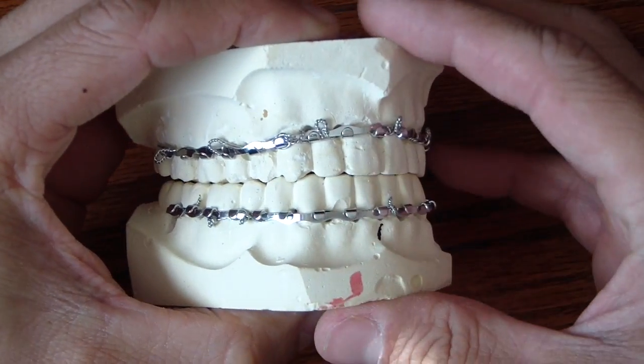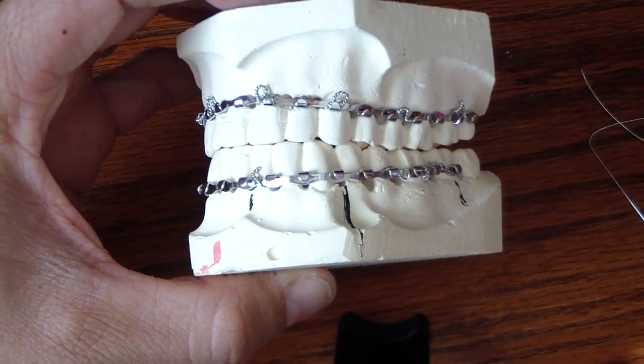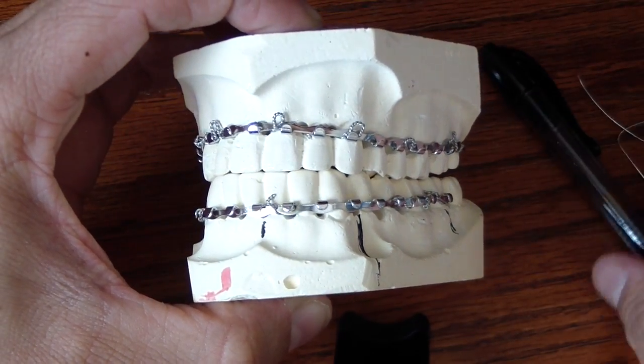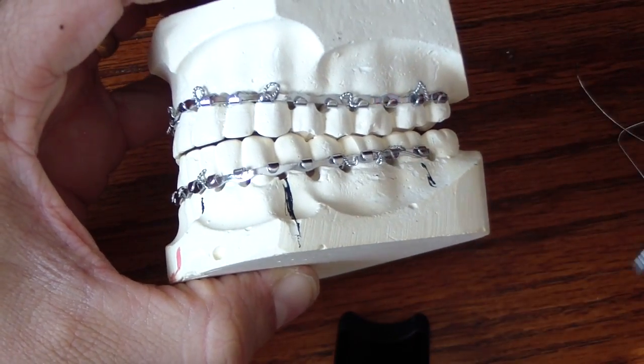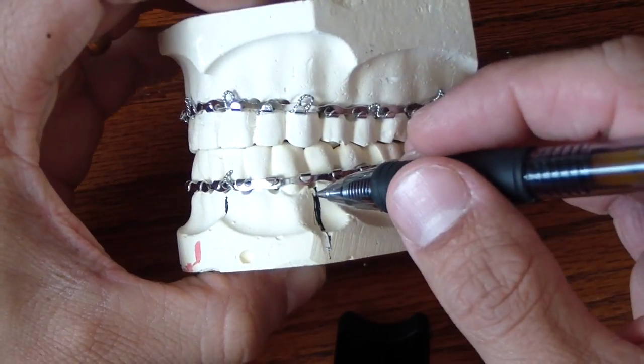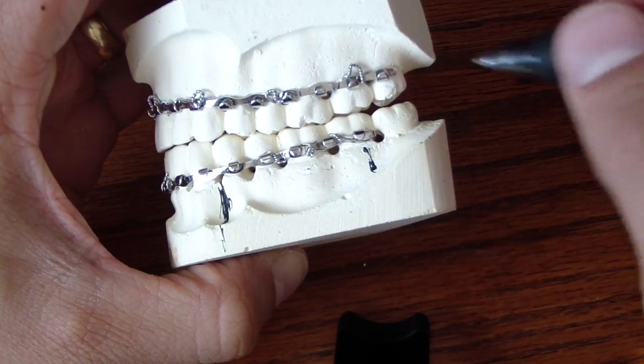This is the final result before we fish loop them together. We have almost every tooth engaged in the arch. The Erich arch bars would be used if you had a mandibular fracture: symphyseal, parasymphyseal, body, angle, or subcondylar.